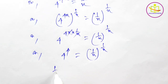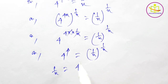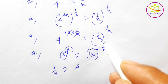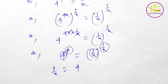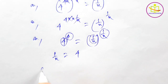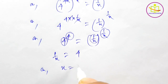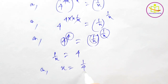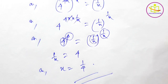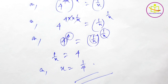1 by x is equal to 4, meaning 1 by x equals 4. From here we can write x is equal to 1 by 4. This is our solution. Hope you understand — don't forget to subscribe, like and share.